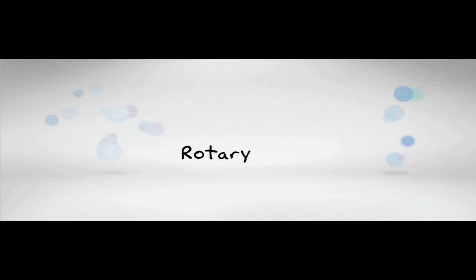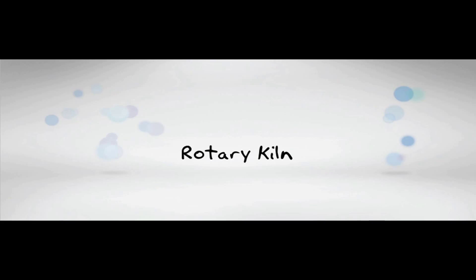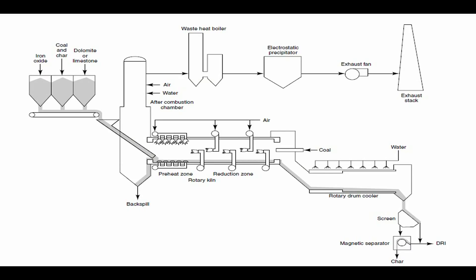The mixture is fed into the rotary kiln where the coal is gasified. The endothermic heat of reduction and the sensible energy required to heat the reactants is provided by combustion of volatiles and carbon monoxide, leaving the bed with air introduced into the free space above the bed.